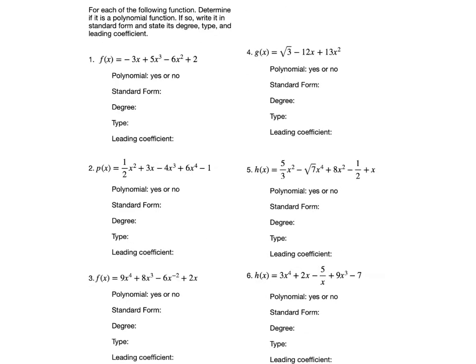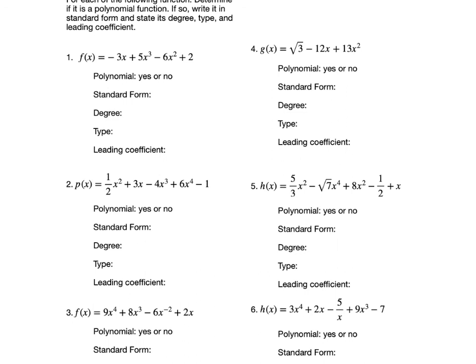This is what your homework looks like — I'll do number one. Is it a polynomial? Check coefficients: one, three, two, and no variable on the last term, so yes. Standard form: five x cubed first, then negative six x squared, then negative three x, then plus two. Degree is three — highest exponent. Type is cubic. Lead coefficient is five. Please write it out fully: polynomial yes, standard form with the function written, degree three, type cubic, lead coefficient five. That's it — good luck!